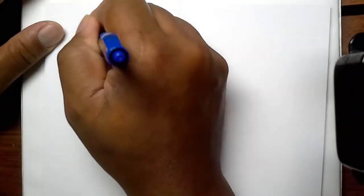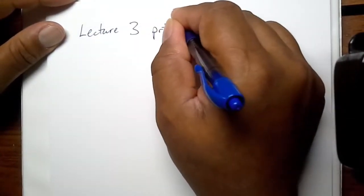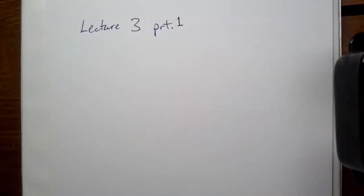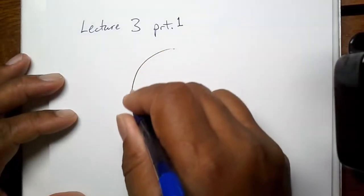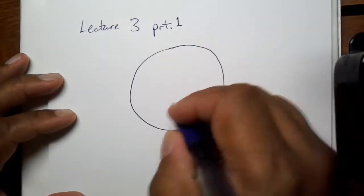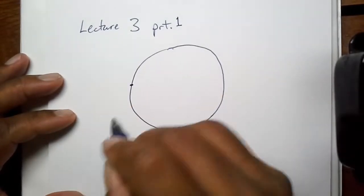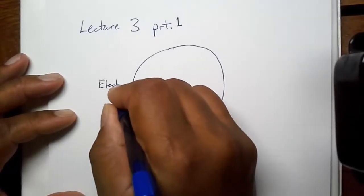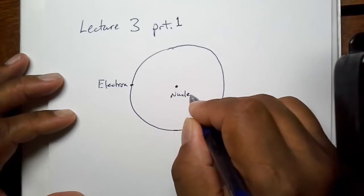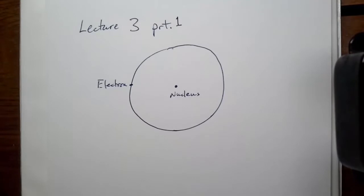So, Lecture 3. I'm going to assume that I'll have a second part, so we'll call this Part 1. Okay, so as we discussed before, the atom consists of an electronic or an electron cloud, a nucleus, and the components of that nucleus are what give our atom its mass.